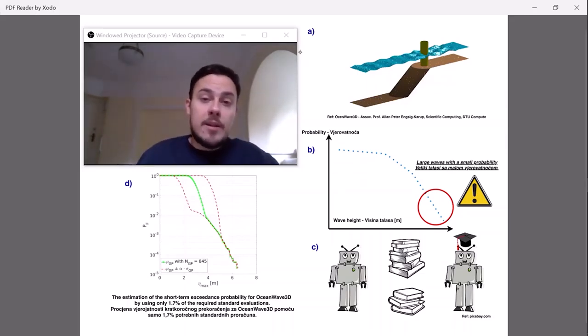First we numerically model waves by solving certain wave equations. Then as the ocean environment is random, we need to repeat and solve wave equations for a large number of different ocean scenarios so that we can eventually catch that rare freak wave.